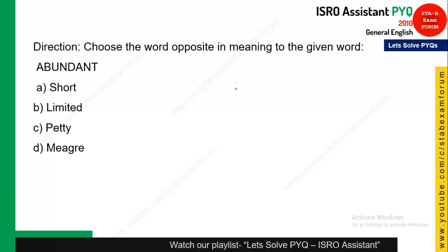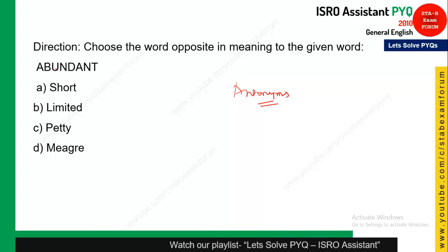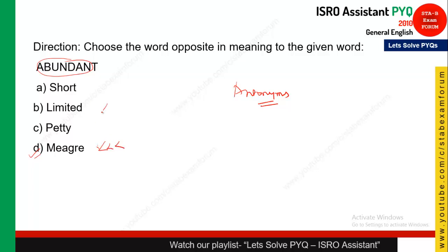This question is from antonyms and the word is 'abundant.' The opposite of abundant could be 'limited' or 'meager,' but 'meager' is the most opposite because it means a very, very small quantity, whereas 'abundant' means a large quantity. 'Limited' and 'short' are also opposites, but 'meager' is the most opposite of all the options. So option D is the correct answer.